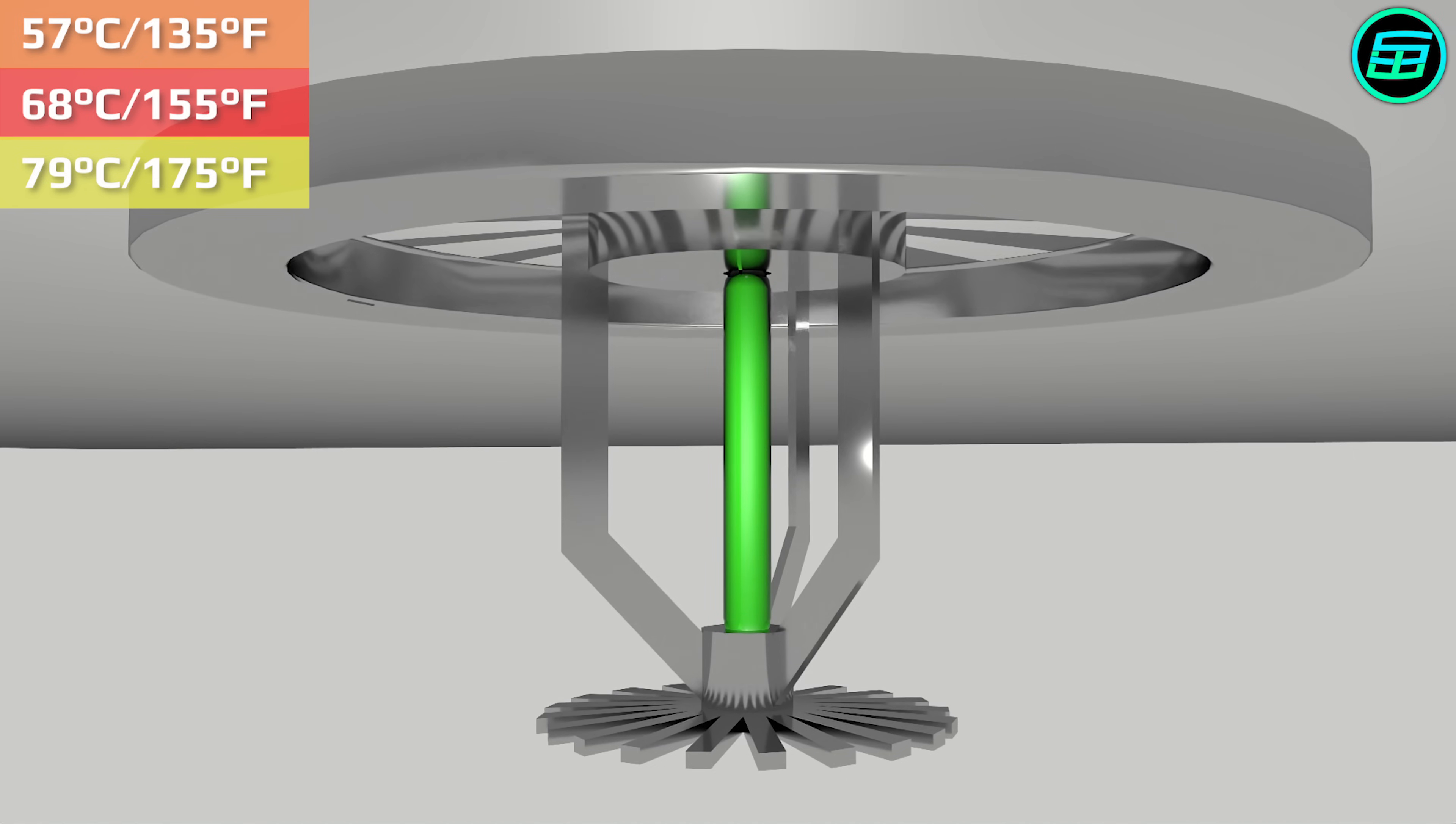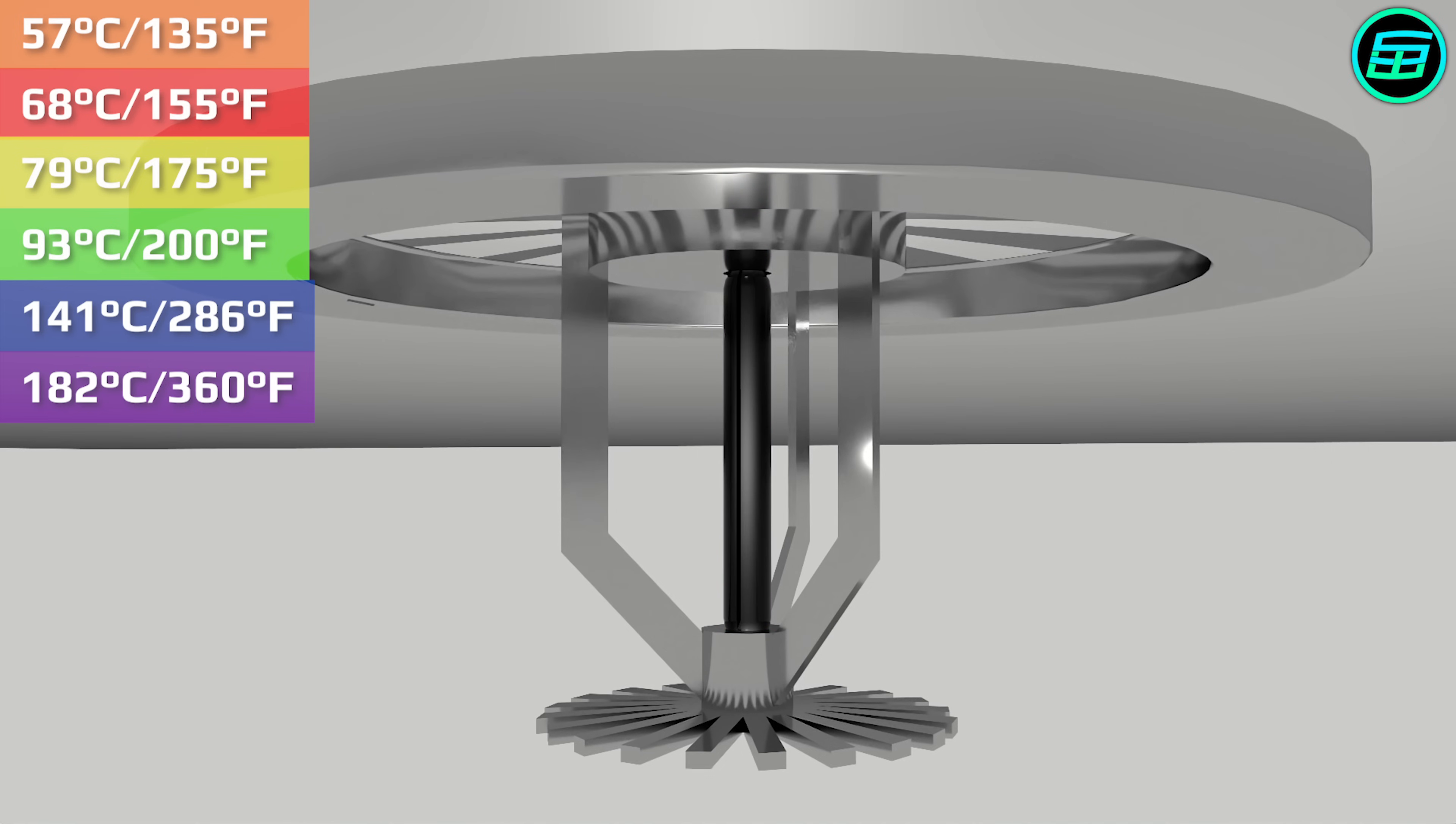Green bulbs 93 Celsius, 200 Fahrenheit. Blue bulbs 141 Celsius, 286 Fahrenheit. Purple bulbs 182 Celsius, 360 Fahrenheit. And black bulbs 227 Celsius, 440 Fahrenheit.